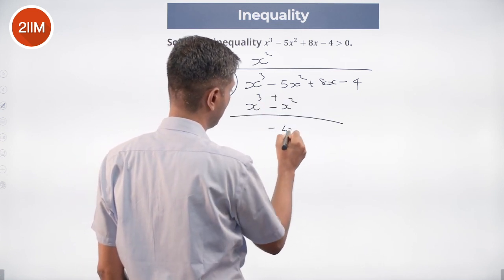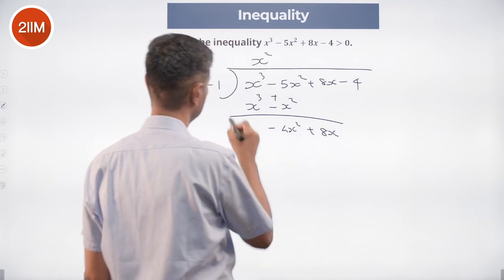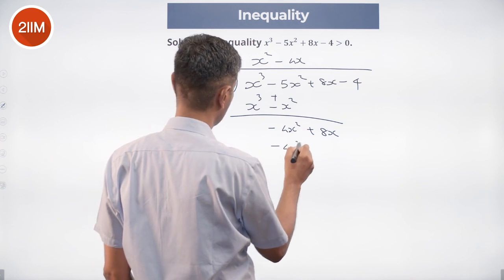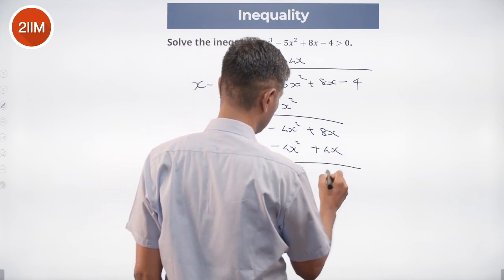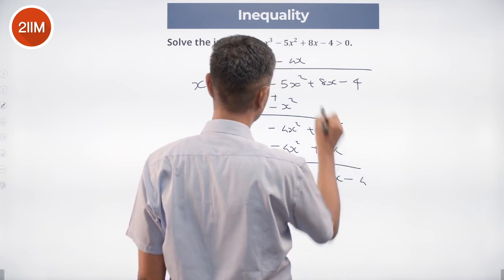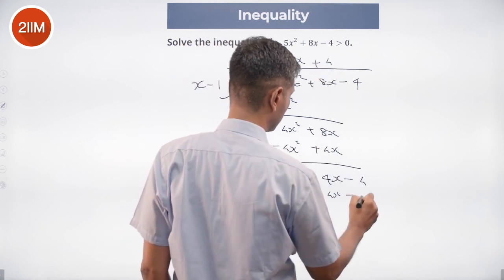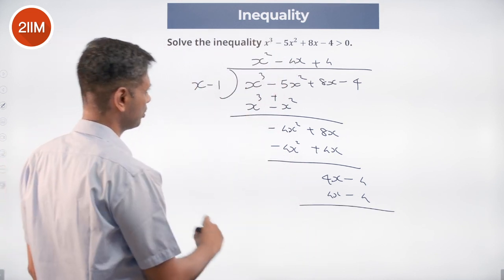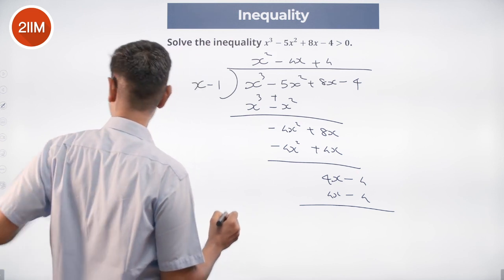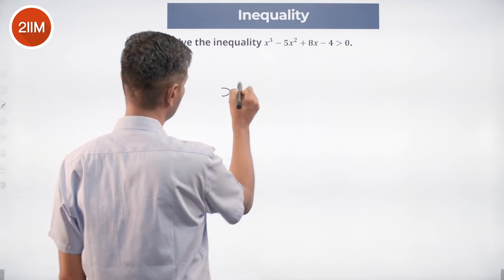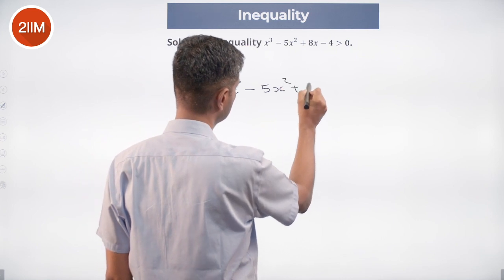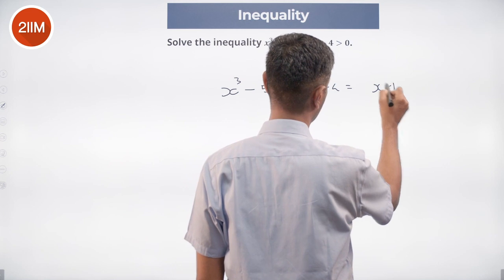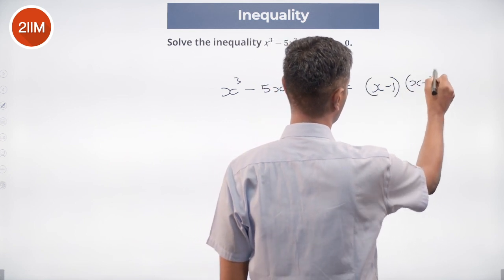We get -4x² + 8x. -4x² + 4x becomes 4x - 4. So our expression x³ - 5x² + 8x - 4 equals (x - 1)(x - 2)².